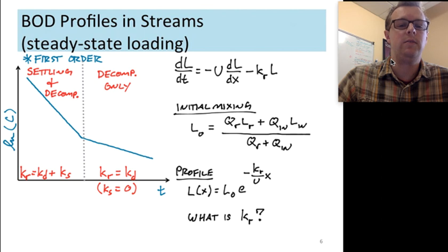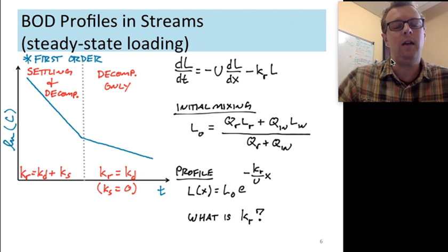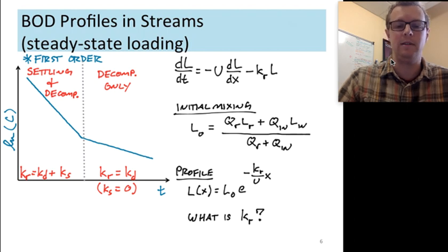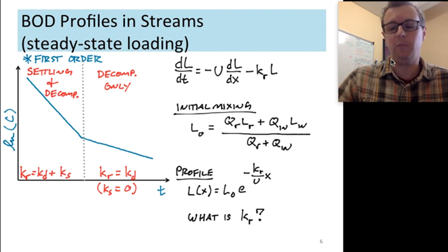And that break occurs because of different processes dominating as we move downstream in the system. So near the wastewater treatment plant, you have both settling of particulate matter and decomposition of the dissolved matter happening. And so that effective K is combining both settling, KS, and decomposition, KD. When we get some distance downstream, everything that has settled out, everything that could settle out has already settled. And so the only thing we have left is decomposition, or our settling removals become zeros.